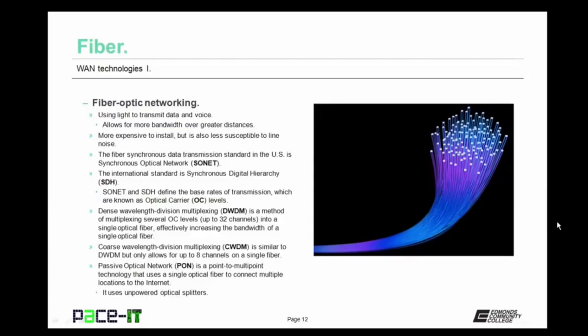Now let's conclude with fiber. Fiber optic networking uses light to transmit data and voice, allowing for more bandwidth over greater distances. Fiber optic networking is more expensive to install but less susceptible to line noise. The fiber synchronous data transmission standard in the United States is called the synchronous optical network, or SONET standard. The international standard is called the synchronous digital hierarchy, or SDH. Both define the base rates of transmission over fiber optic cabling, known as optical carrier levels. Dense wavelength division multiplexing allows multiplexing of up to 32 optical carrier levels into a single fiber optic cable, effectively increasing bandwidth.